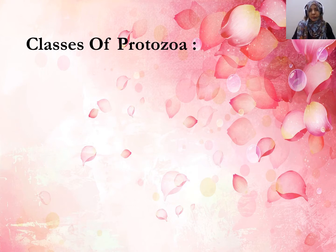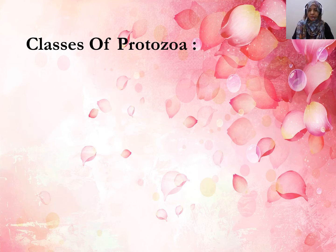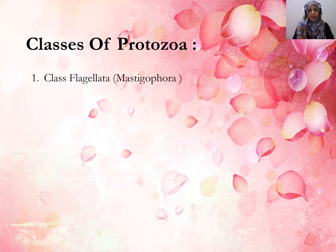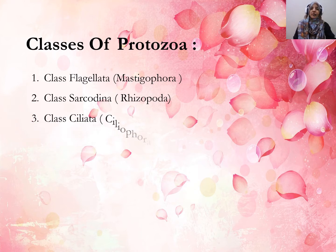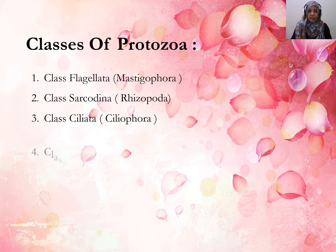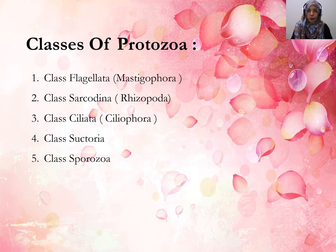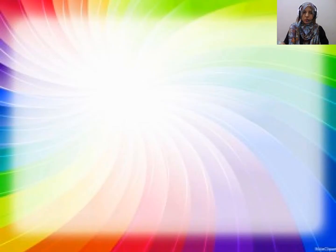In the previous class we started with 30,000 species of Protozoa, divided into 5 classes: Class Flagellata, Class Sarcodina, Class Ciliata, Class Suctoria, and Class Sporozoa. So let's start.